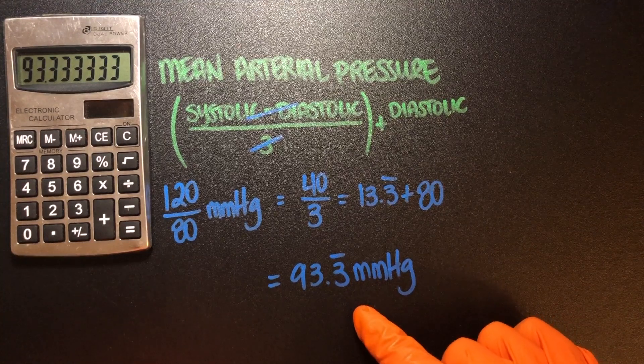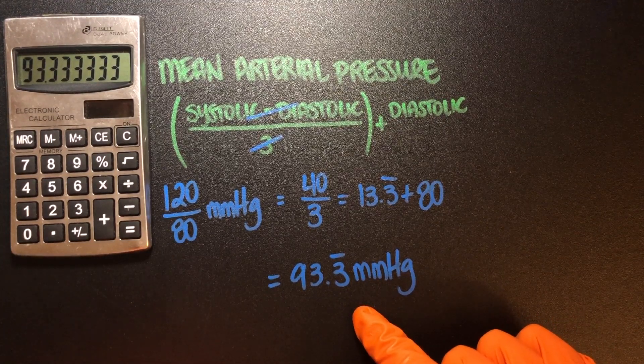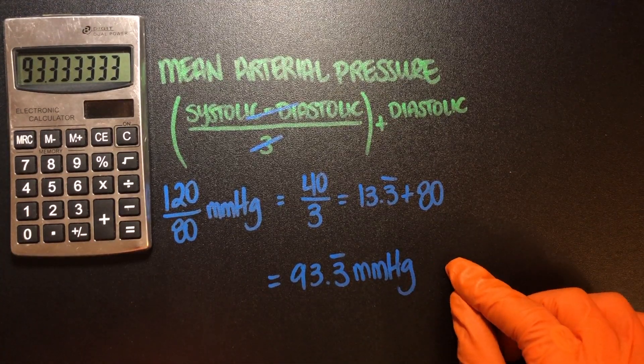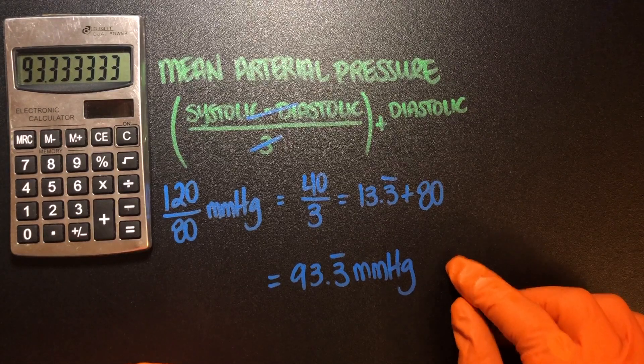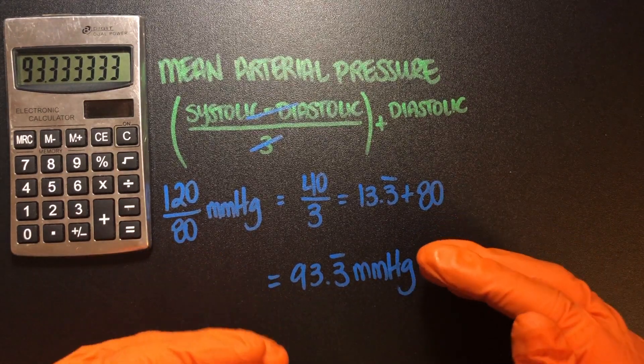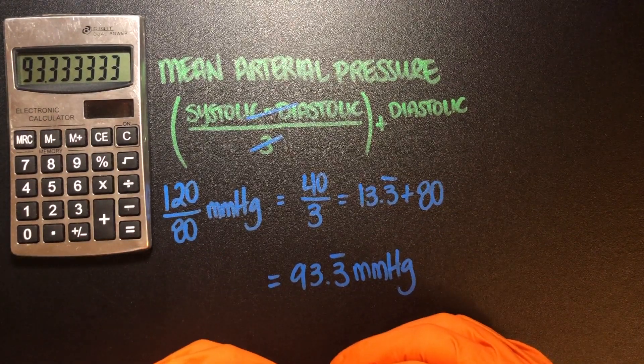A higher MAP, so anything greater than 110 millimeters of mercury might mean we have some edema. We have a lot of fluid, a lot of pressure building up.